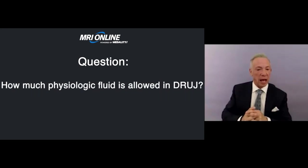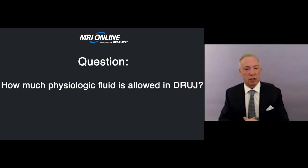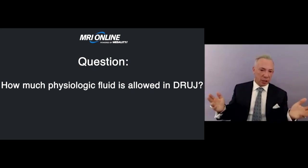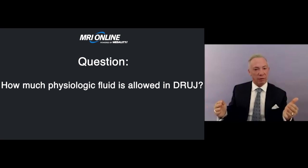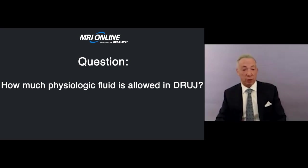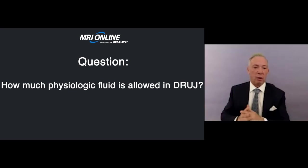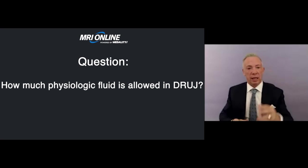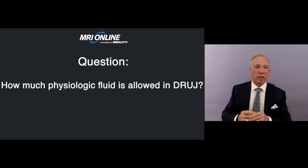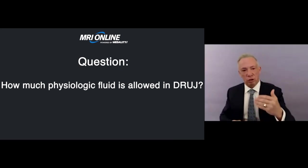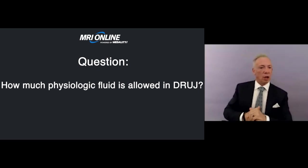Regarding physiologic fluid in the distal radial ulnar joint: I allow a slit — about a millimeter of fluid. There's some subjectivity, but it's a very tiny amount, and it depends on patient age. For a 15-year-old I don't want to see any fluid; for a 50-year-old I'll allow a millimeter. If I'm on the fence, I look at the volar and dorsal radial ulnar ligaments, the intrinsics, and the adjacent radial ulnar cartilage.